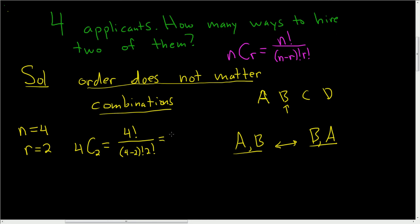So let's keep going. Four factorial is 24. It's four times three times two times one. Here we get two factorial, which is two. Two factorial, which is two. So we get two times two. So we get 24 over four, which is six.